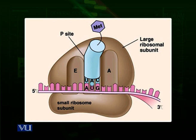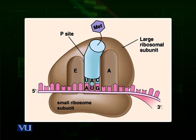When the next tRNA attaches to the A-site, again a peptide bond is formed between the second and third amino acids. When this bond is formed, the ribosome moves ahead again. Due to this movement, the first transfer RNA — which brought methionine according to the AUG start codon — is released from the E-site. The second transfer RNA comes to the E-site, the third transfer RNA moves to the P-site, and the A-site is again free. The fourth transfer RNA comes and attaches. Again a peptide bond is formed, and this process continues until a stop codon is reached.